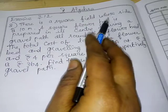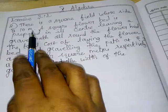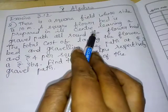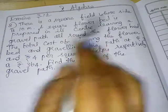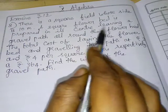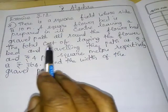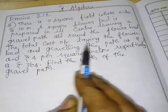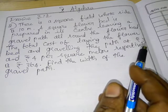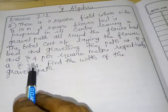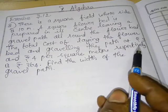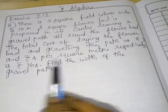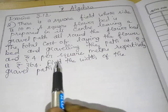There is a square field whose side is 10 meters. A square flower bed is prepared in its center, leaving a gravel path all around the flower bed. The total cost of laying the flower bed and graveling path at rupees 3 and 4 per square meter respectively is rupees 364. Find the width of the gravel path.